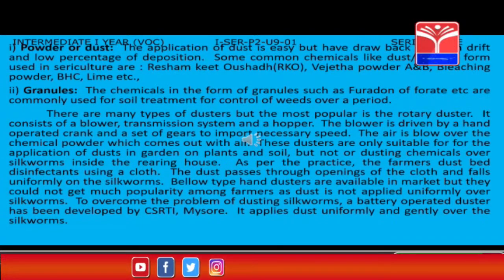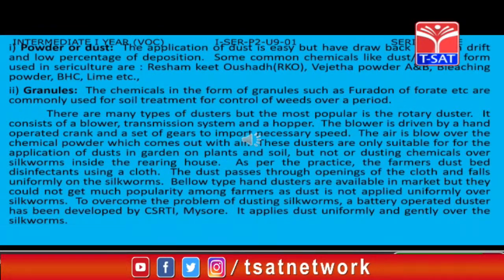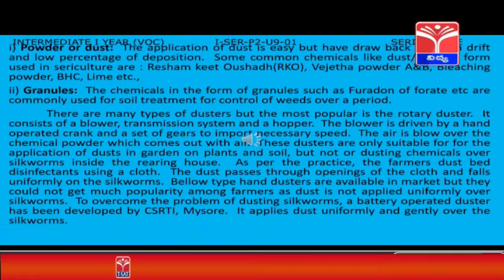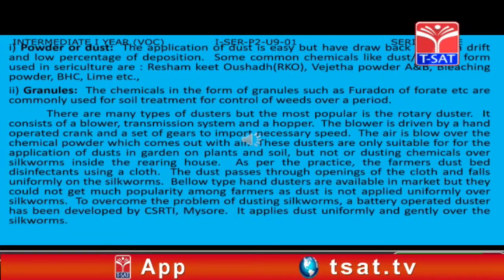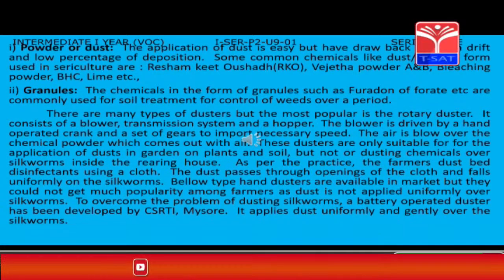Use of chemicals in gaseous form is very limited in sericulture. The only known use of chemical vapors in sericulture is for checking attack of pests such as domestic beetles on cocoons in a storeroom, and fumigation of rearing houses.